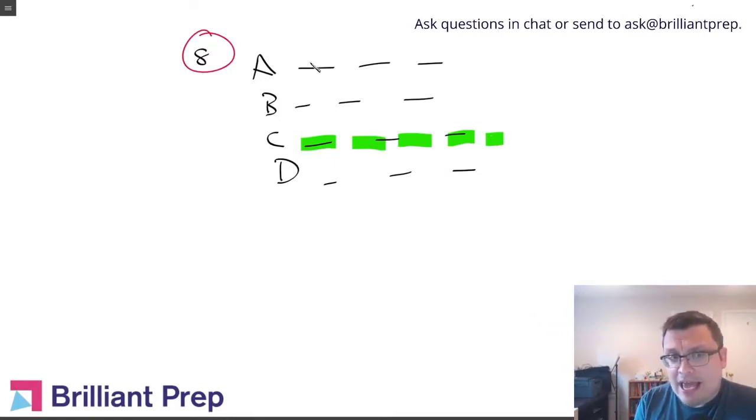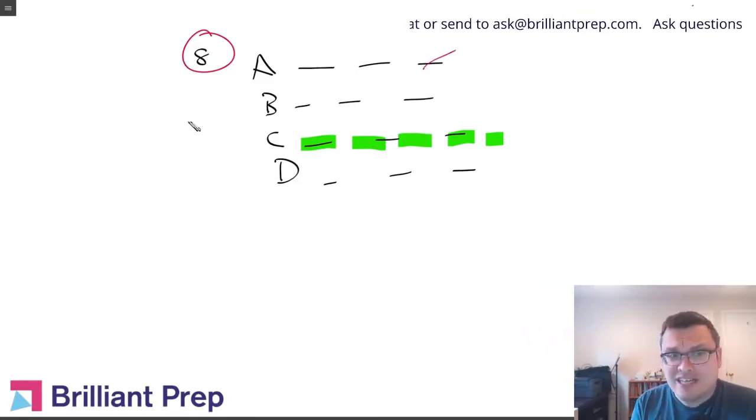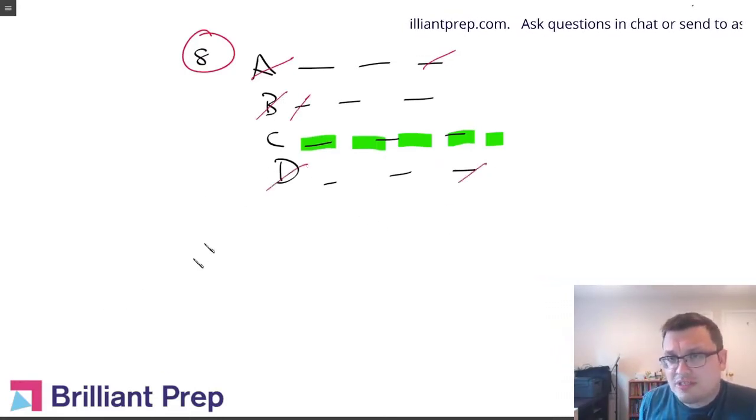But if I look at A and I see it's got this little mistake there, the rest of the choice almost doesn't matter at that point because I know A is out. And when I look at B and I see an error there, the whole choice is out. And when I look at D, error there, the whole choice is out. So it's easier to find mistakes.